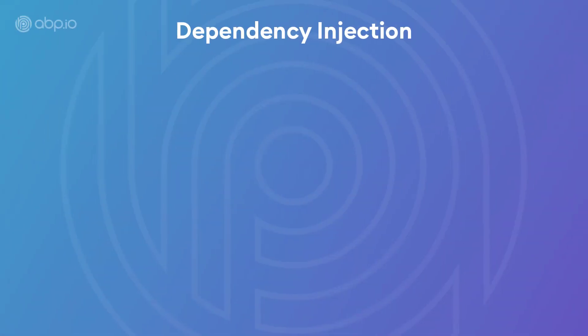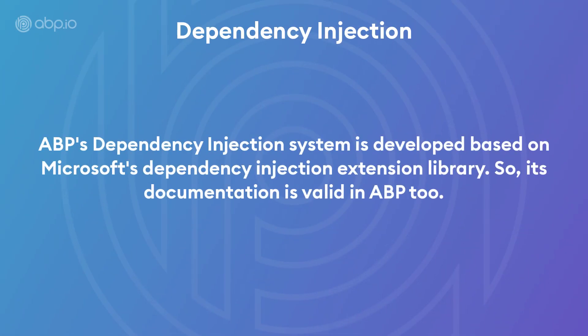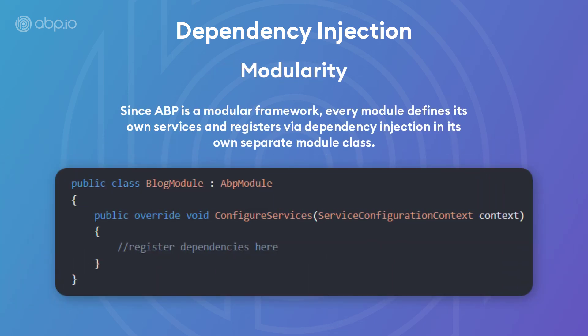ABP's dependency injection system is developed on top of Microsoft's dependency injection extension library, so its documentation is valid in ABP as well. Since ABP is a modular framework, every module defines its own services and registers them via dependency injection in its own separate module class.